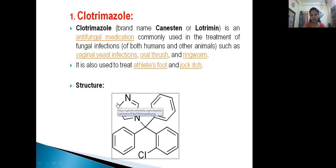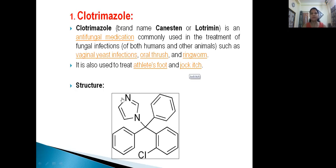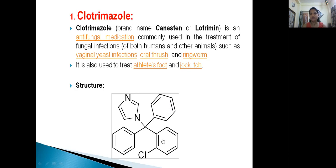First we will see Clotrimazole. Clotrimazole is an antifungal medication commonly used in the treatment of fungal infections in humans as well as animals — it is the only one in our syllabus used for both. It treats vaginal yeast infection, oral thrush, ringworm, athlete's foot, and jock itch. The structure has three aromatic rings, one pentagonal ring with nitrogen, and a chlorine atom attached.